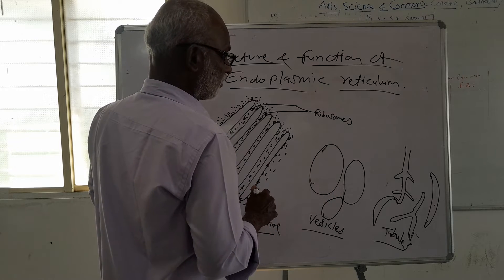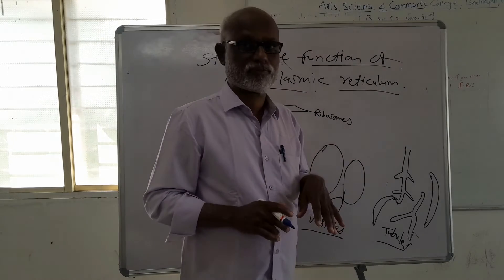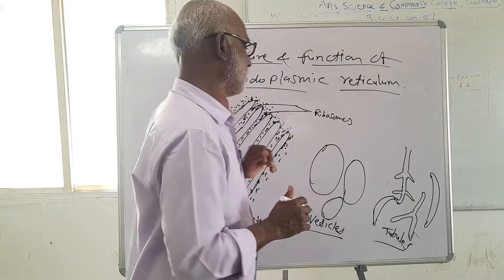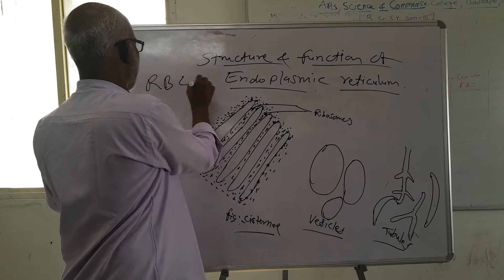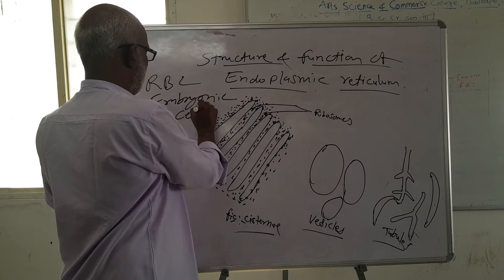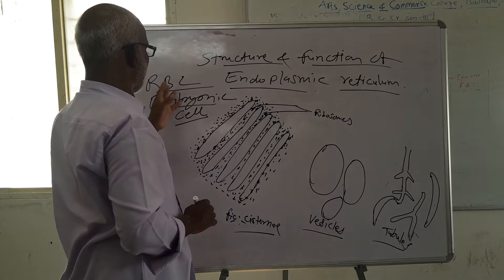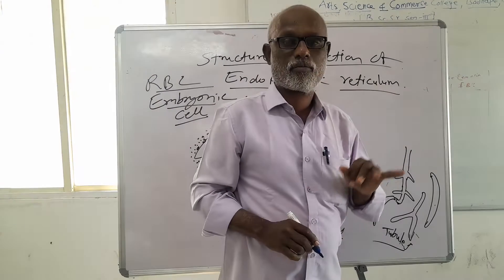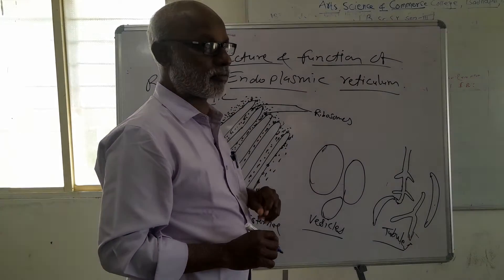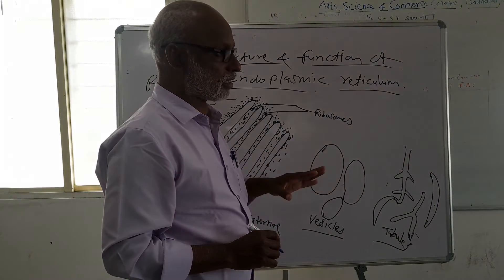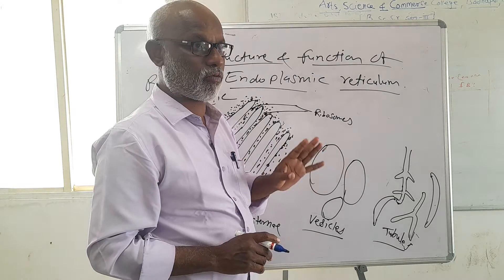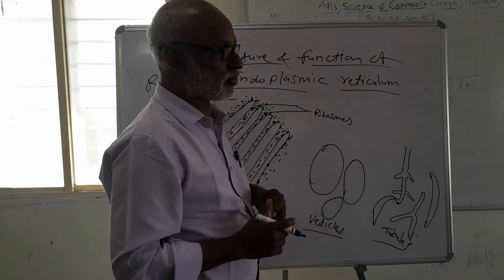Only two cell types do not have the endoplasmic reticulum: embryonic cells and RBC. These two cells — RBC and embryonic cells — do not have endoplasmic reticulum. But other cells, like liver cells, have both types of endoplasmic reticulum: granular and agranular.